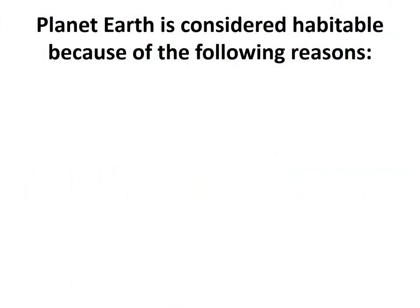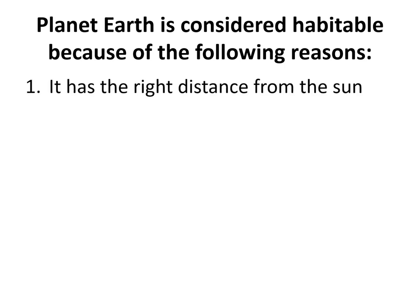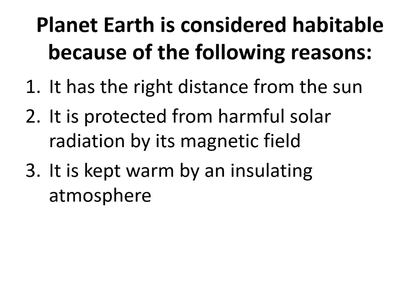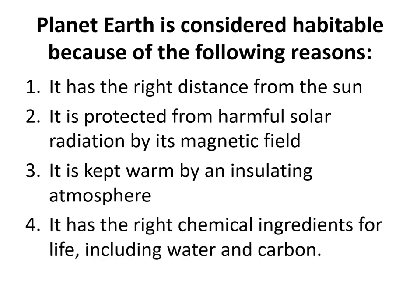Planet Earth is considered habitable because of the following reasons: it has the right distance from the sun; it is protected from harmful solar radiation by its magnetic field; it is kept warm by an insulating atmosphere; and it has the right chemical ingredients for life, including water and carbon.